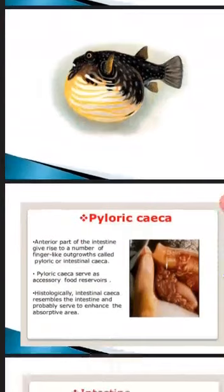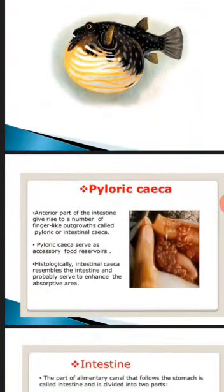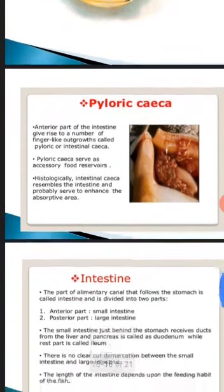The anterior part of the intestine gives rise to a number of finger-like outgrowths called pyloric caeca or intestinal caeca. These pyloric caeca serve as accessory food reserves — when abundant food is available it is stored here. Histologically, intestinal caeca resemble the intestine and probably serve to enhance the absorptive area of the fishes.